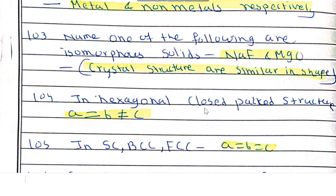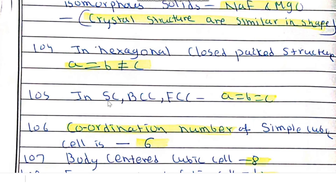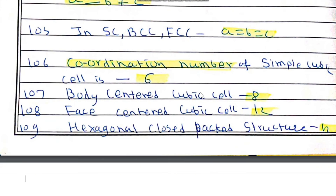In a hexagonal close-packed (HCP) structure, the lattice parameters are a = b ≠ c. In simple cubic, body-centered cubic, and face-centered cubic structures, a = b = c. The coordination number of a simple cubic cell is 6, while that of a body-centered cubic cell is 8.